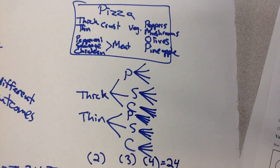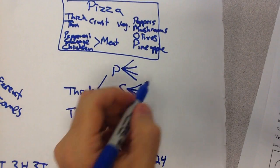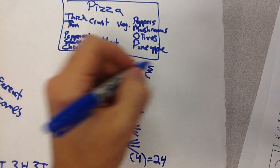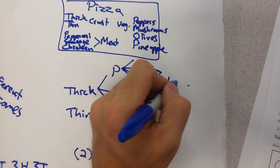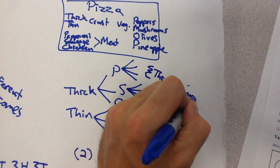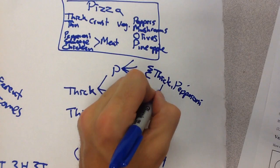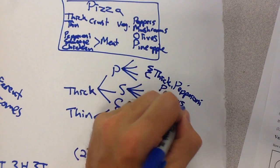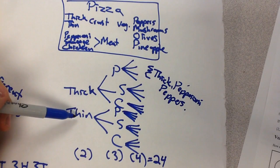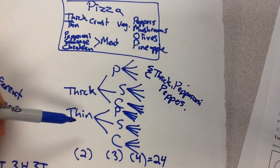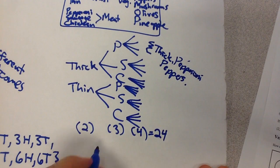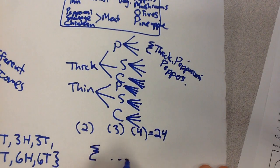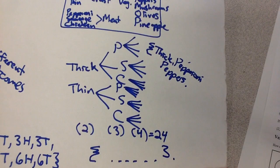So I actually have 24 different options. Now I'm not going to write all of those values out, but we could kind of see. We could have a thick crust with pepperoni and peppers. And that would be a different outcome than a thin crust with pepperoni and peppers, or a thin crust with chicken and pineapple. We have all those different options. And you would have to write them as your set or your sample space.